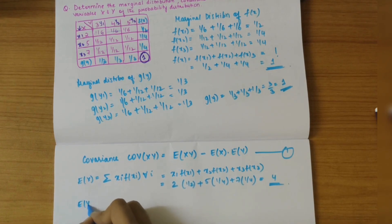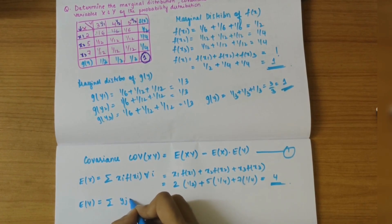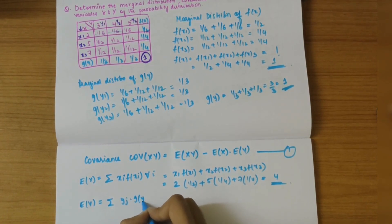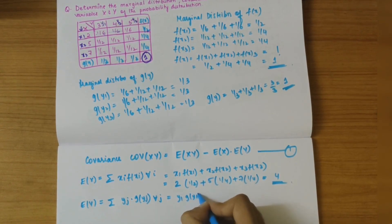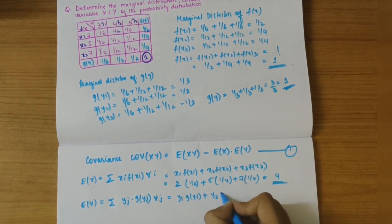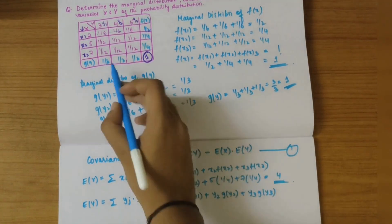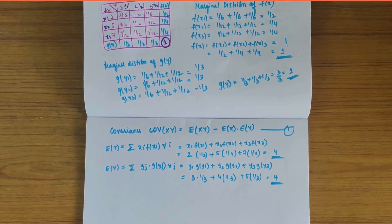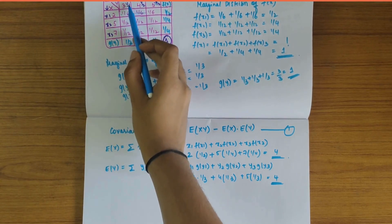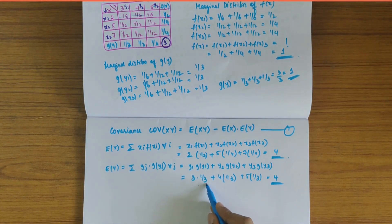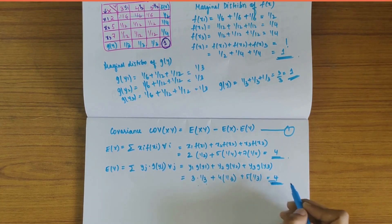Now let's write E(y). E(y) is the summation of y_j · g(y_j) for all values of j, that is y1·g(y1) + y2·g(y2) + y3·g(y3). Substituting: y1 = 3, g(y1) = 1/3; y2 = 4, g(y2) = 1/3; y3 = 5, g(y3) = 1/3. So E(y) = 3·(1/3) + 4·(1/3) + 5·(1/3) = 4.